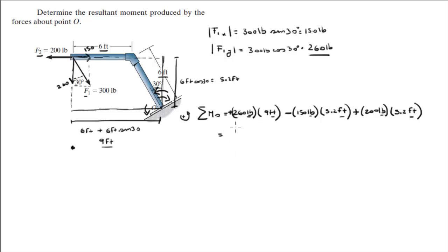When you plug these numbers into your calculator, it comes out to be 2,600 foot-pounds, which can also be expressed as 2.6 kilopounds per foot. That's the sum of the moments, and since it's positive, it means that it's going counterclockwise. Final answer.